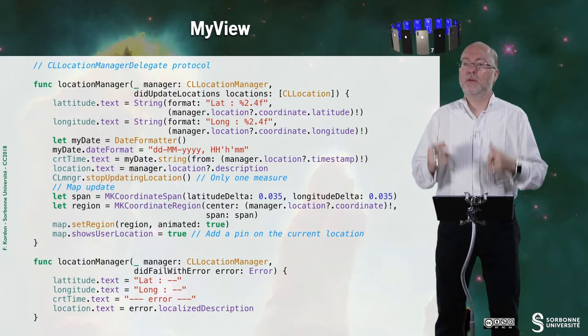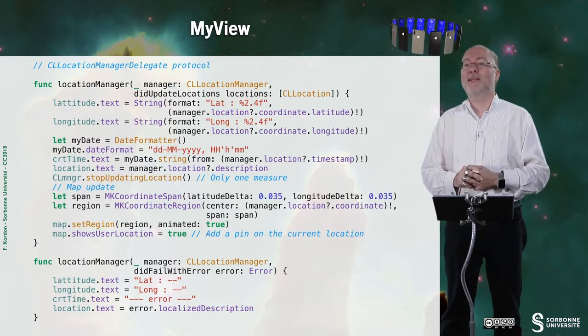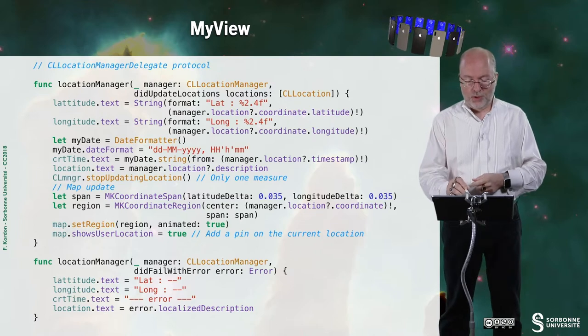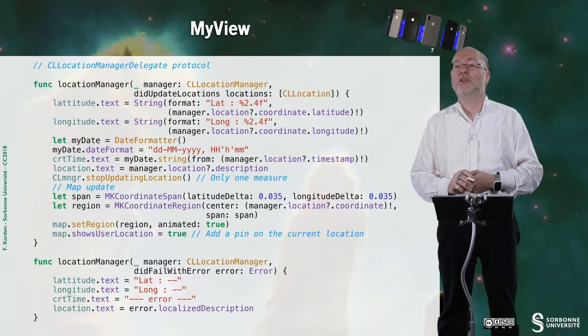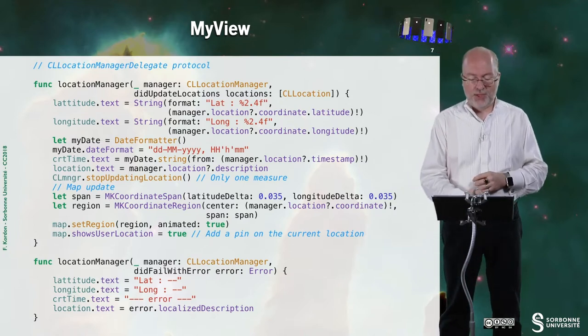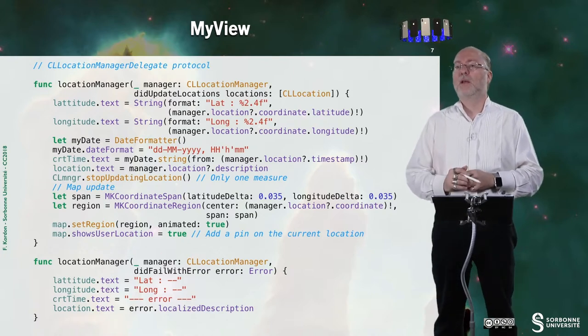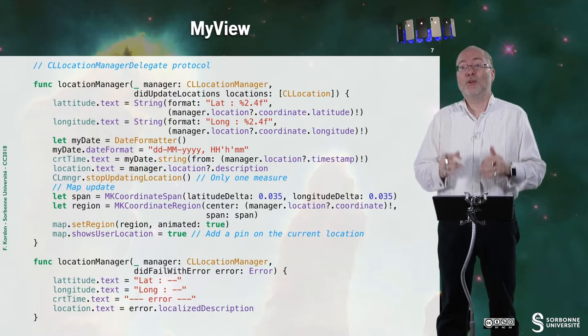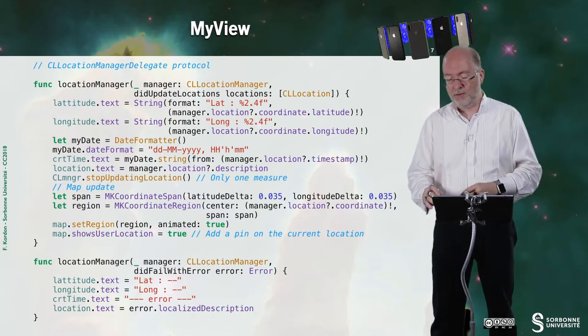Now I am answering to the methods of CL location manager delegate protocol. So this is what I do if I have my location updated. So everything is OK. And this is what I do if there is a problem. Here I don't have to take care of these headings.